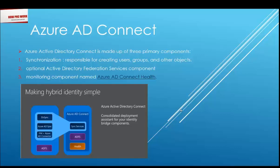Looking at the diagram, it shows DirSync, Azure AD Sync, and FIM plus Azure AD Connector. In the classic model, Microsoft first came with Directory Sync — the first tool for AD sync between on-premises and Azure. Then they came with Azure AD Sync as the newer version, and then FIM and Azure AD Connect. Nowadays it's a combination of all three tools combined into sync services.